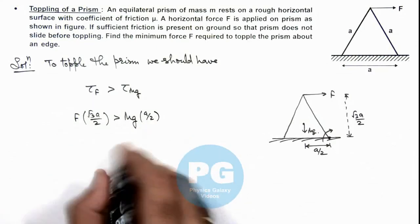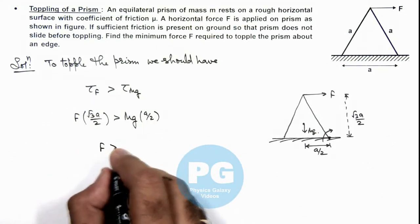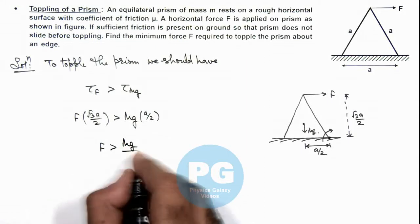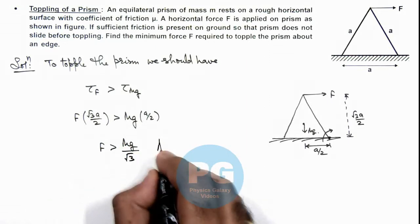And simplifying this gives us, F should be greater than mg by root 3. That should be the result of this problem.